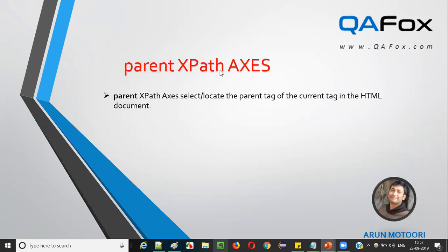Now let's move to the next slide — that is the parent XPath axis. In the previous videos I explained different types of XPath axis: following, preceding, following sibling, and preceding sibling. In the current video I'm going to explain the fifth type — parent XPath axis. It's quite simple: if you are locating some HTML tag using an XPath expression, and you want to find the parent tag of that currently located tag, you use the parent XPath axis.